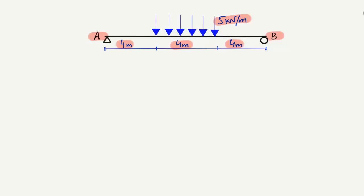To find the support reactions, the two unknowns are Ra and Rb. The hinge support at A can take vertical load — represented by Ra — and the roller support at B can also take vertical load, represented by Rb. The hinge support can also take horizontal load, but since there is no horizontal load acting on this beam, the horizontal component of the hinge support is equal to zero.